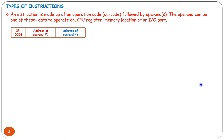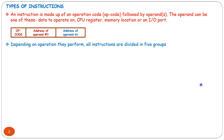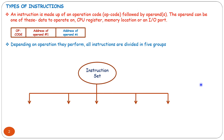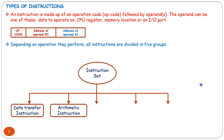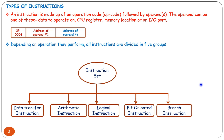Every instruction consists of three fields: Operation Code field, Address of Operand 1, and Address of Operand 2. An instruction is made up of Operation Code followed by Operands. The operands can be data to be operated on, a CPU Register, Memory Location, or an Input-Output device. Depending upon the operation they perform, all instructions are divided into five groups: Data Transfer, Arithmetic, Logical, Bit Oriented, and Branch Instruction.